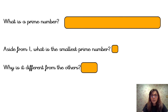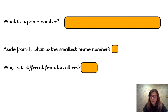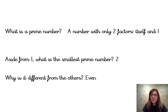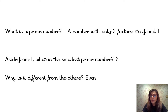So now we're going to be looking at prime numbers. I'd like you to record what you think a prime number is. And apart from 1, what is the smallest prime number? And why is it different from all the other prime numbers? A prime number is a number with only two factors — only itself and 1. And apart from 1, the smallest prime number is the number 2, and it's because it's even. Prime numbers are all odd numbers except for the number 2. 2 is the only even prime number.